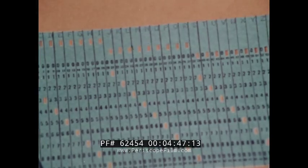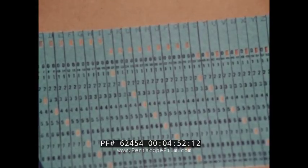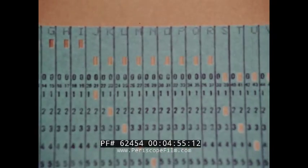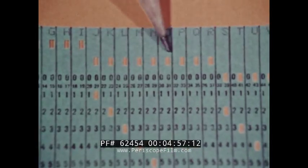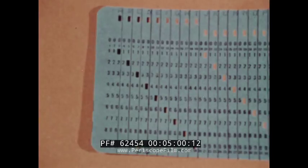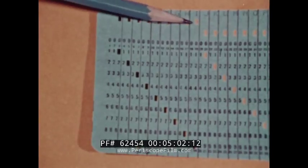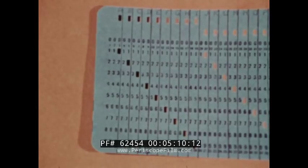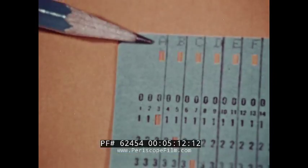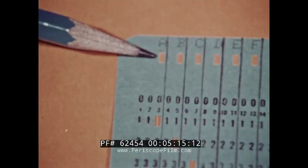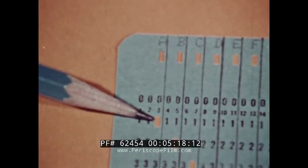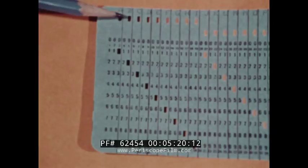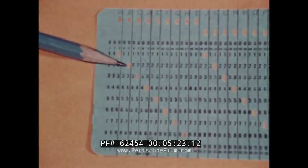To present each alphabetic character, a combination of two holes is needed. This is because the 26 letters in the alphabet cannot be accommodated in a single column of the card. This is where zoning principles are used. The 12 row is the zone punch used with the first nine letters A to I. The other hole is punched according to the order of the letter. For instance, to indicate A, a column is punched in the 12 row and further down the 1 is punched. For B, the 12 and 2 are punched.